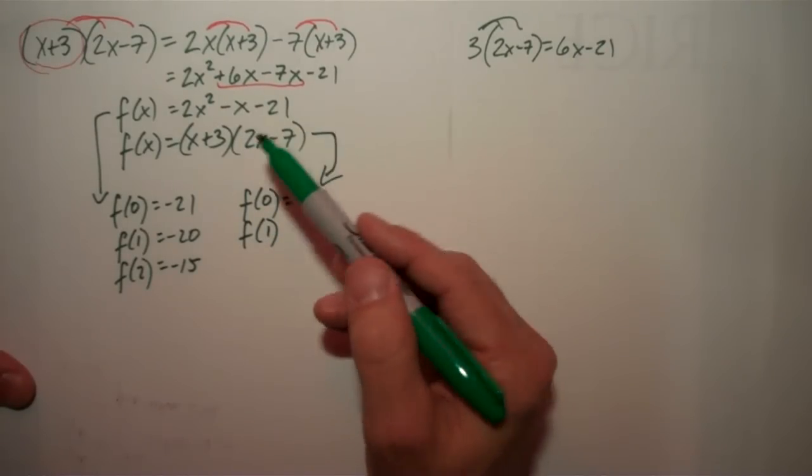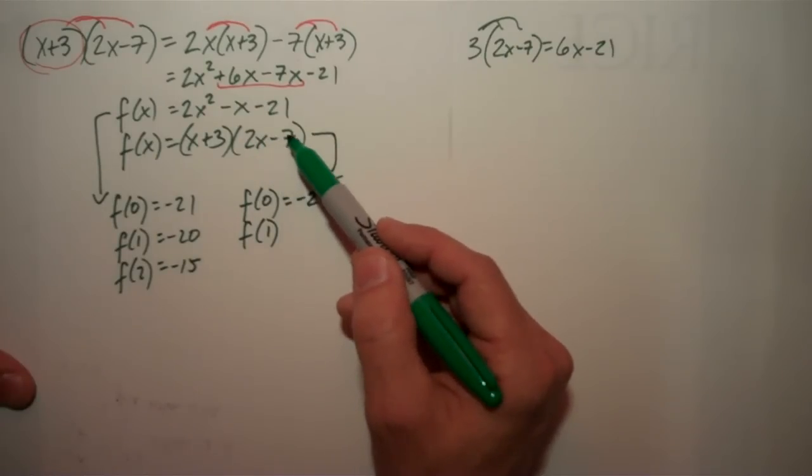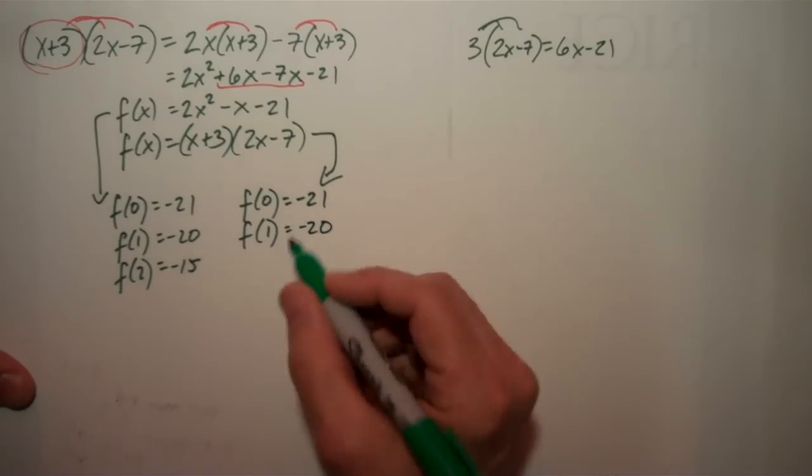f of 1, 1 plus 3 is 4, 2 times 1 minus 7 is negative 5, and 4 times negative 5 is negative 20. Uh-huh, good.